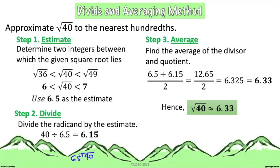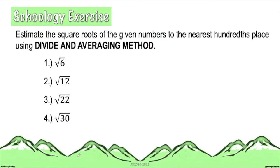Notice that the symbol used is not an equal sign. That is because 6.33 is not equivalent to the square root of 40 — it is only an approximation. This is the proper symbol to use in expressing your final answer. Now, open your notebook and estimate the square roots of the given numbers to the nearest hundredths place using the divide and averaging method.